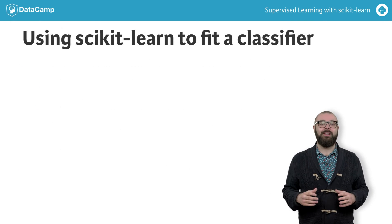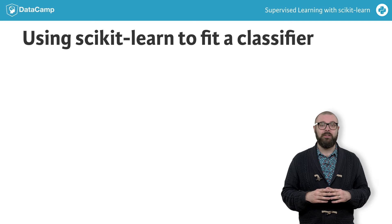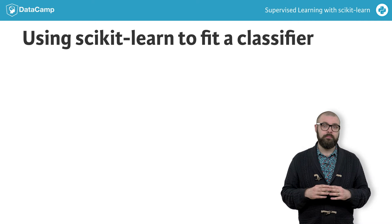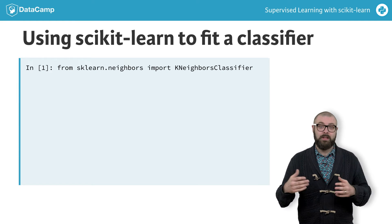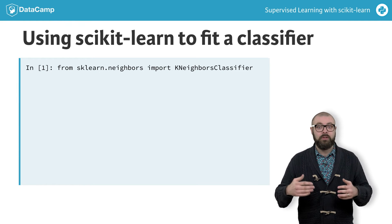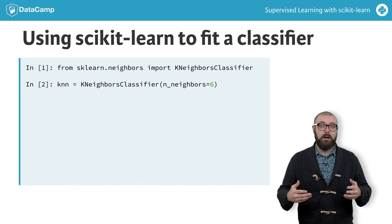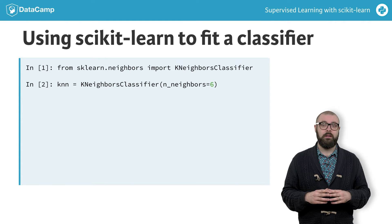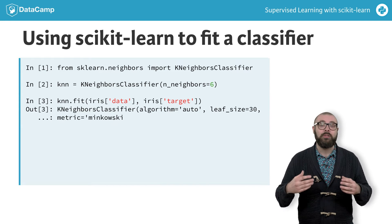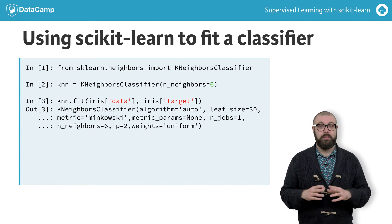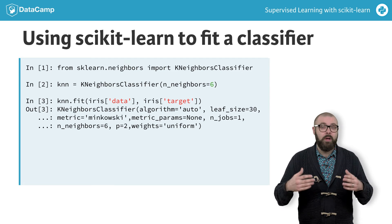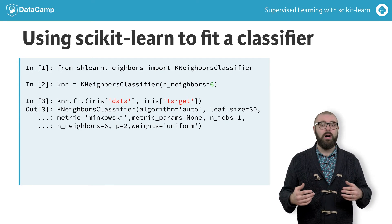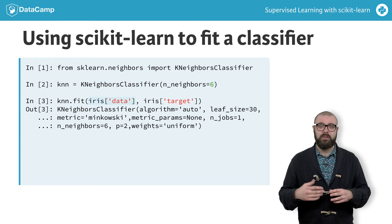Now we're going to fit our very first classifier using scikit-learn. We first need to import it — we import KNeighborsClassifier from sklearn.neighbors. We then instantiate our KNeighborsClassifier, set the number of neighbors equal to 6, and assign it to the variable KNN. Then we can fit this classifier to our training set, the labeled data, by applying the fit method to the classifier and passing it two arguments: the features as a numpy array and the labels or target as a numpy array.